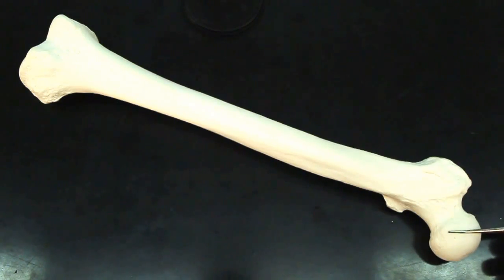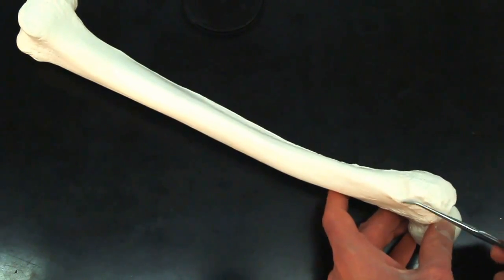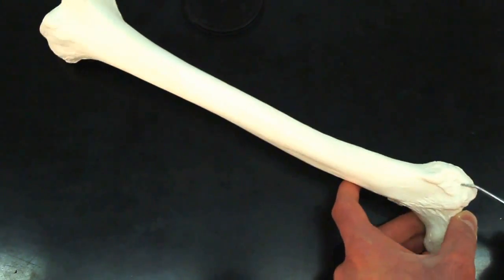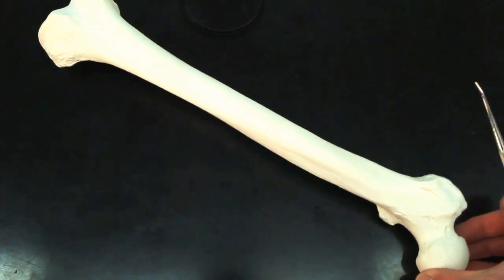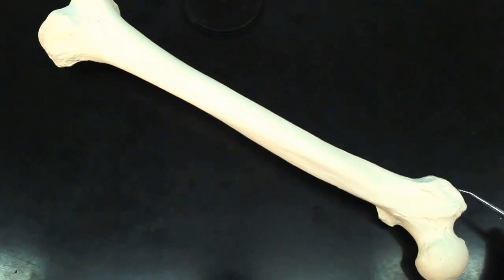But then, as we go more lateral on the bone, so the head's medial, this rough protrusion out here - you can see how it goes all around the bone - this rough protrusion is going to be your greater trochanter.